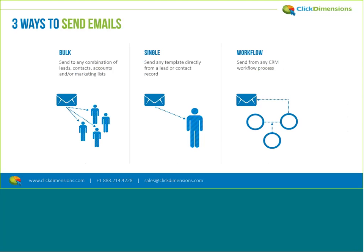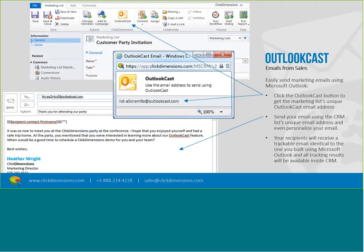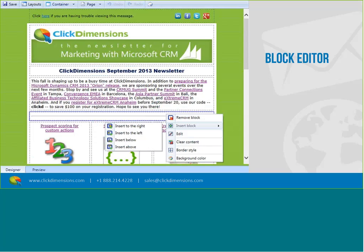You can send emails in a variety of ways — bulk email to contacts, leads, accounts, or marketing lists; a single email to a contact or lead by clicking a button on that record; via workflow to add a trackable email to existing processes; or through nurture programs and form automation. When building templates, it's like building with Legos — you can right-click, add blocks, change blocks, and work in design view or HTML view.